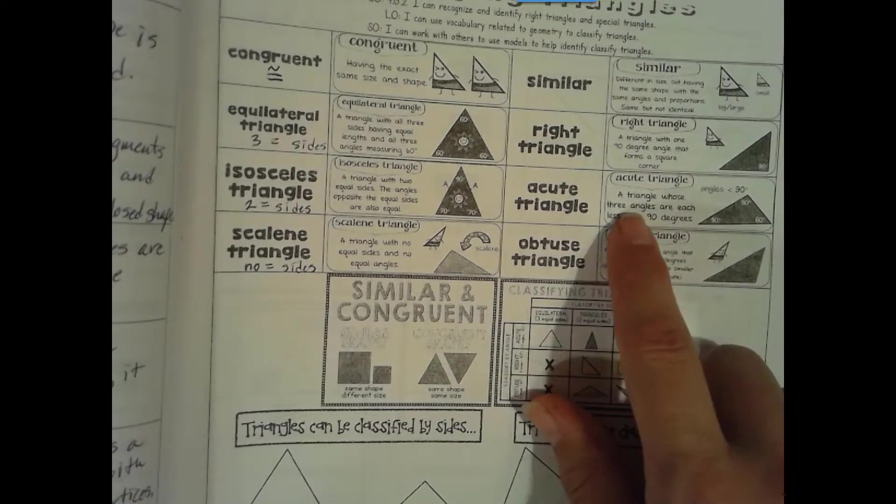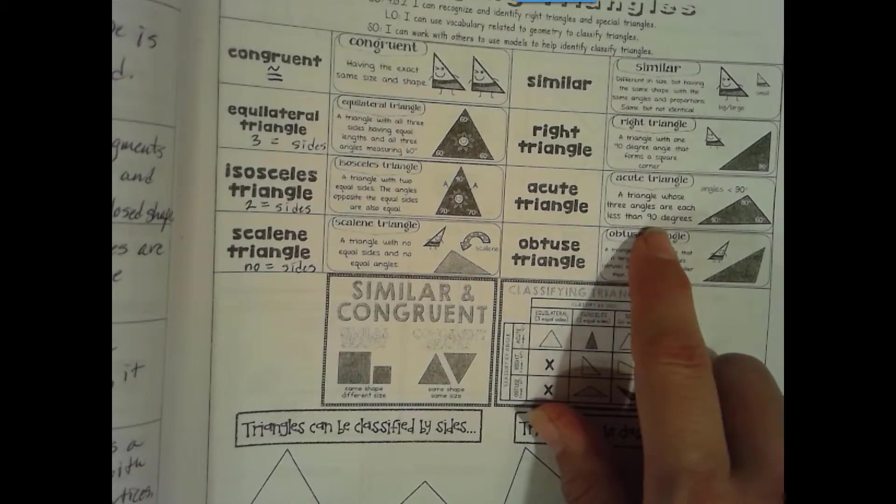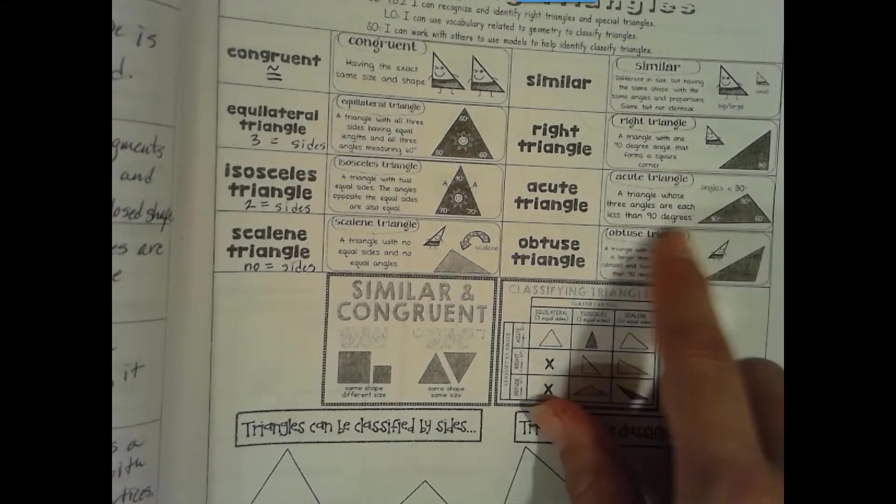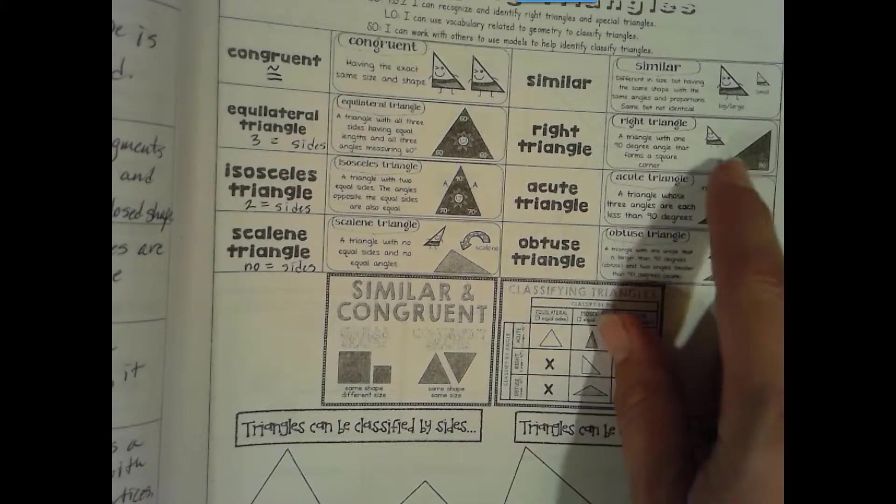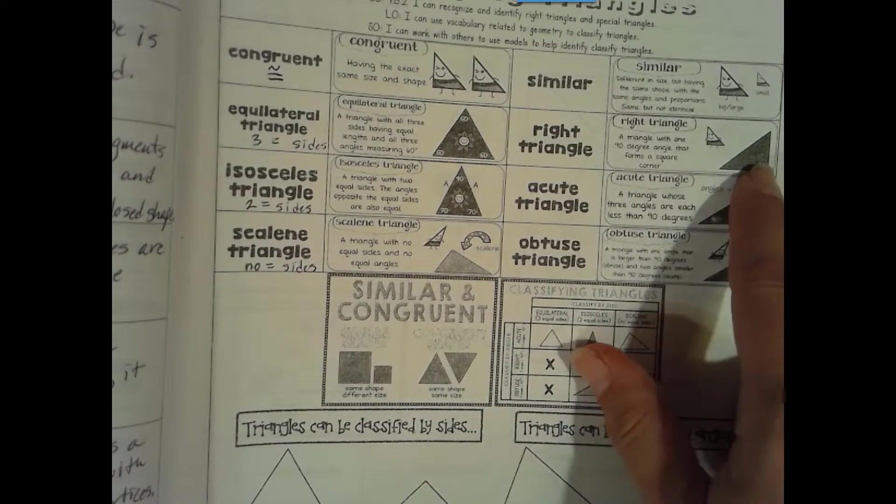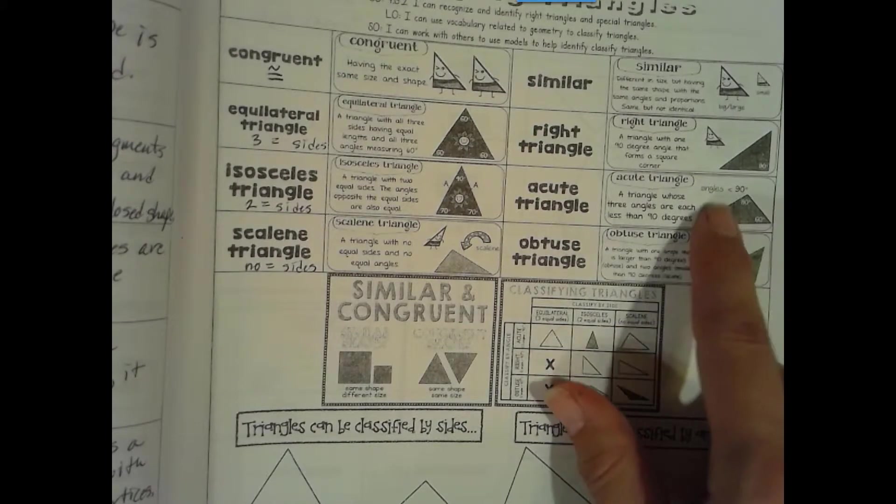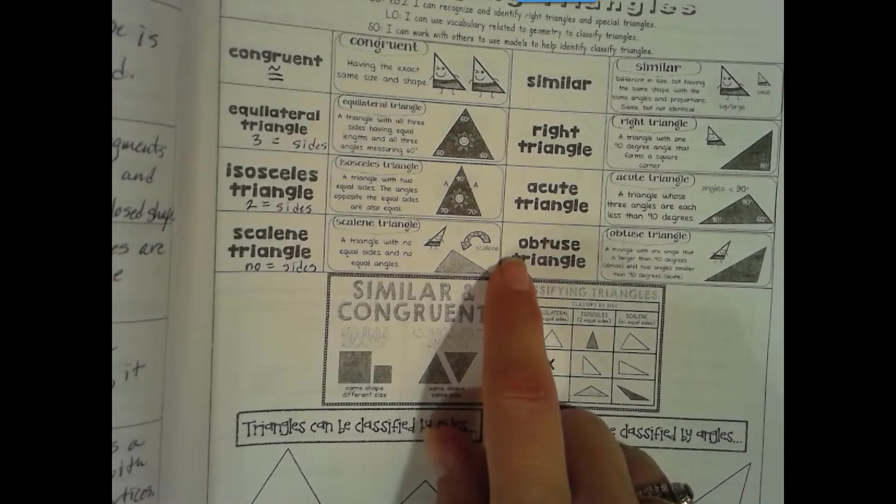Acute triangle: a triangle whose three angles are each less than 90 degrees. So all three angles have to be acute. Because every triangle will have acute angles. This one has two acute but one right, so it's a right triangle. All three have to be acute to be an acute triangle.